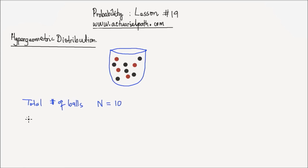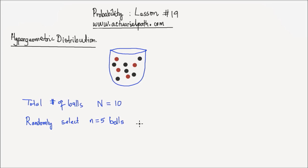What we want to do is randomly select five — I'm going to call that little n, which is equal to five — balls from the urn without replacement. This is the key word in hypergeometric distribution: it is done without replacement.